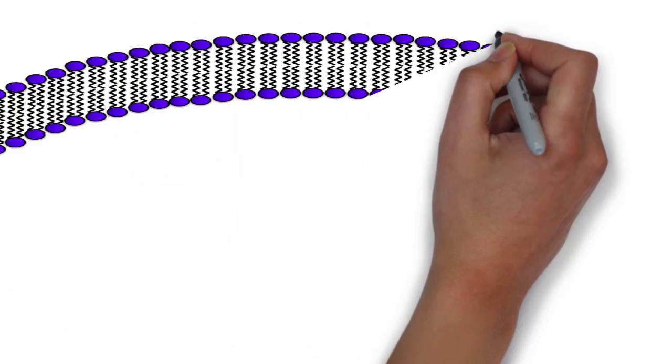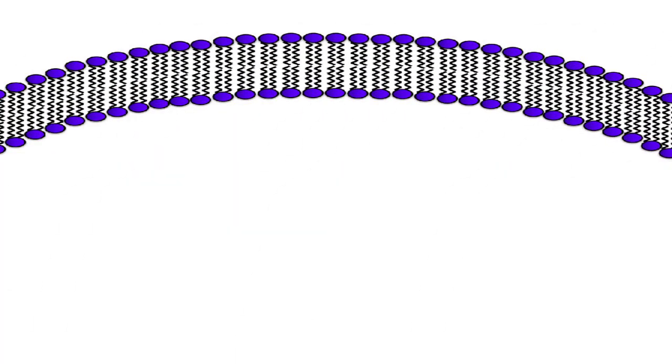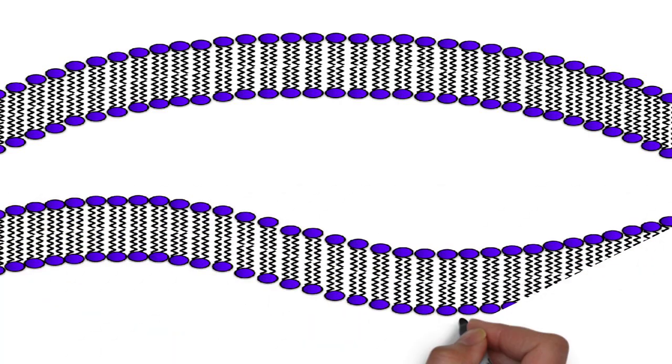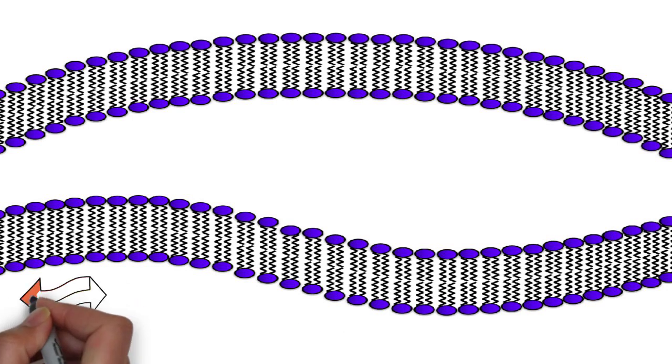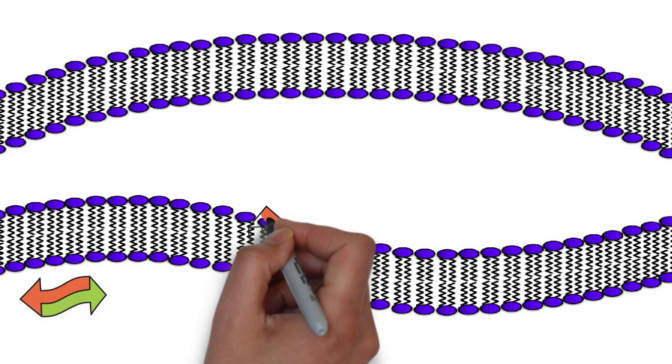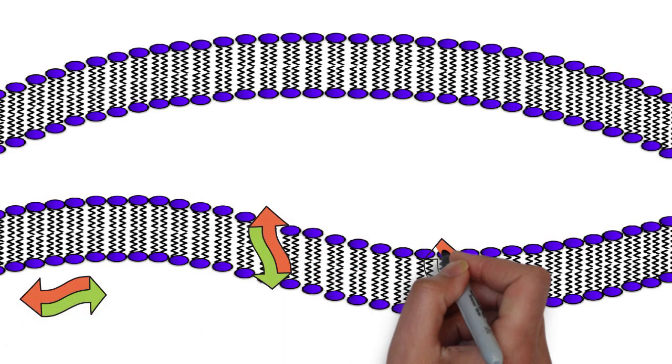Because these phospholipid molecules are held together by weak forces of attraction, it also gives the cell membrane a very fluid and dynamic structure, where the individual phospholipid molecules are able to slide past one another and move further or nearer to one another as and when needed.